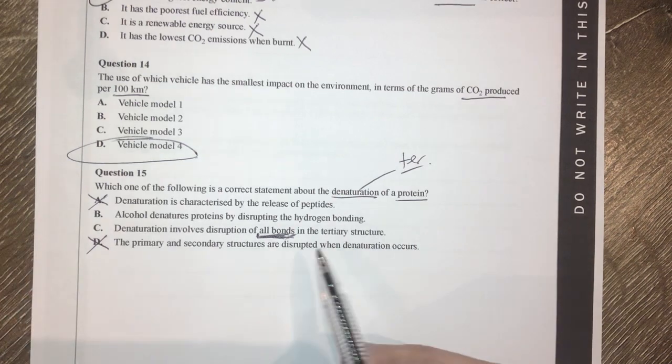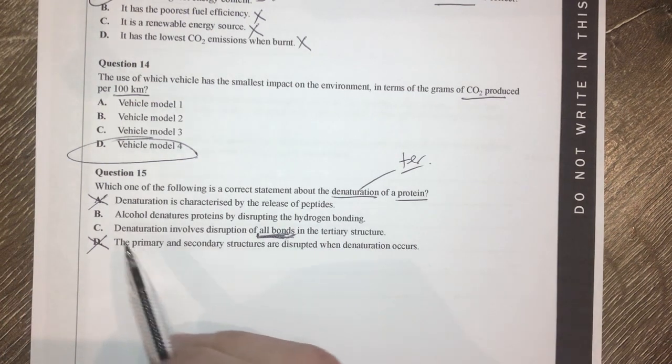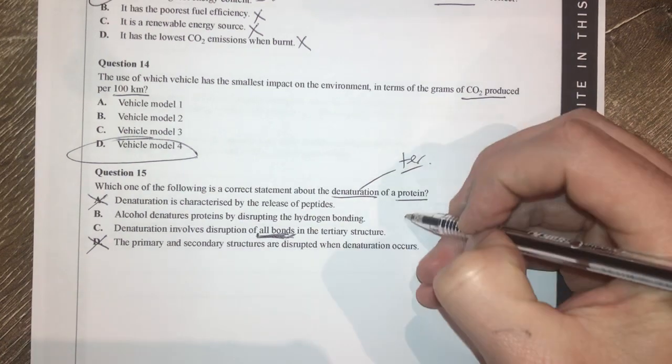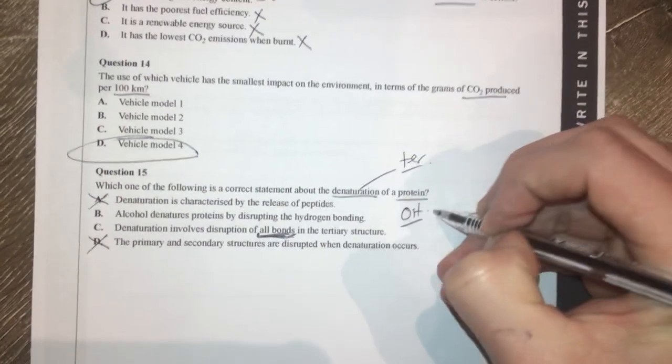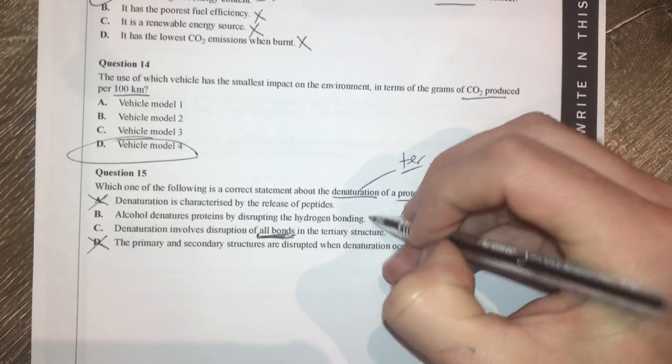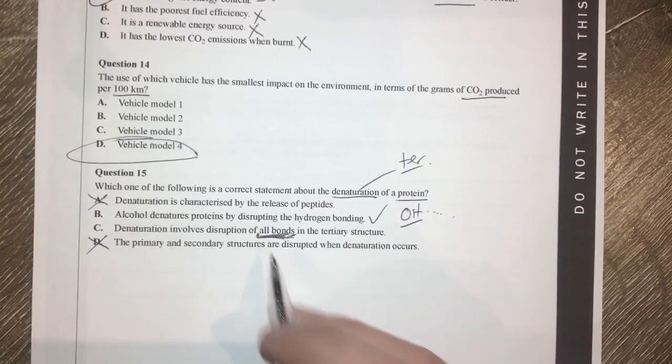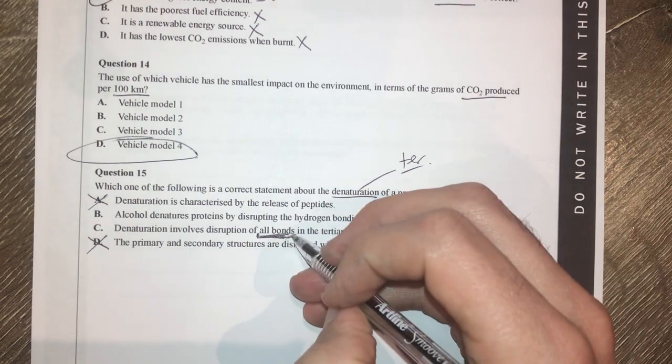So it only affects the tertiary bonds. So denaturation of a protein, what's going to happen here? Now, alcohol denatures proteins by disrupting hydrogen bonding. Alcohols have an OH bond. That is going to hydrogen bond with something because it kind of makes sense to me.